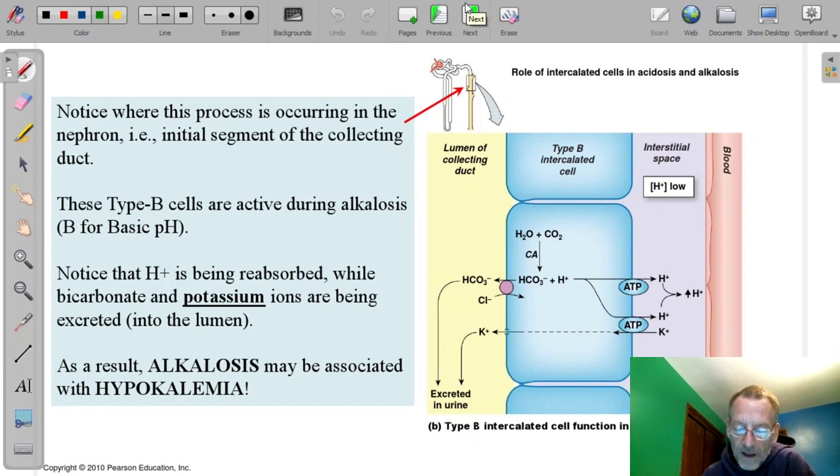So this is a type B cell. And this is the picture with alkalosis. The previous picture was with acidosis. Let's work through the box on the left. Pretty similar to the box we had in the previous slide.